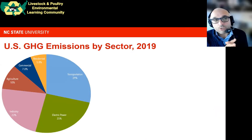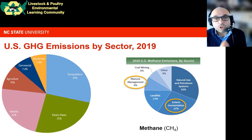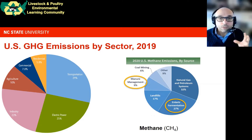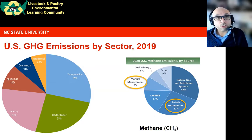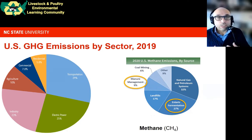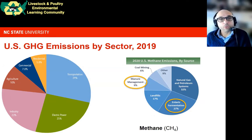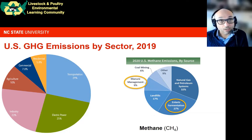Looking at methane specifically in this pie chart, we see a different story. Two sectors related to animal agriculture — circled in yellow — together make more than a third of U.S. methane emissions. These are enteric fermentation from ruminants such as cattle, sheep, and goats, from digestion in multiple stomachs, as well as manure management, which accounts for about 9% of methane emissions. This highlights the important contributions of animal agriculture and the opportunities for reduction.